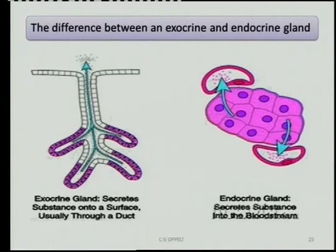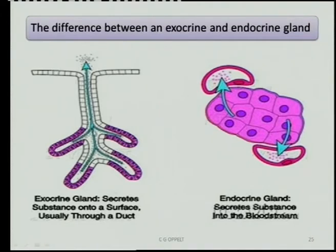What is an exocrine gland versus an endocrine gland? An example of an exocrine gland is your salivary glands in the mouth — the substance secreted goes into a special duct, such as down the esophagus. In contrast, an endocrine gland secretes hormones directly into the bloodstream.